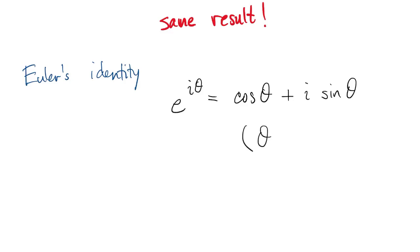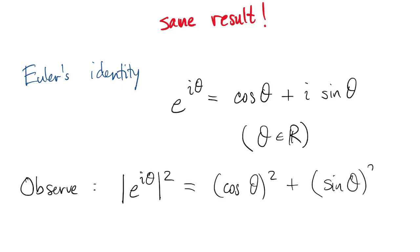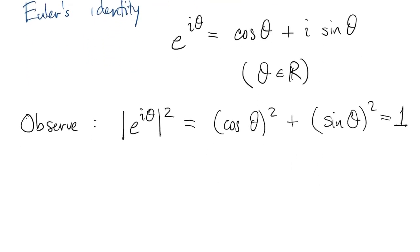Here I am thinking of θ as being real. Now the modulus squared of any complex number is the real part squared plus the imaginary part squared. So in that case, this is just equal to 1.